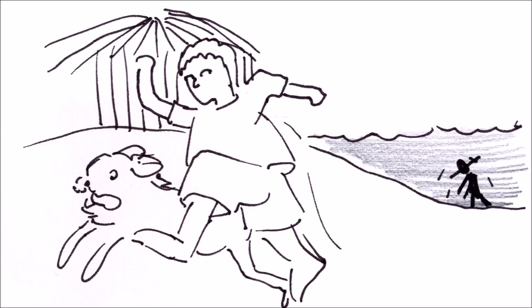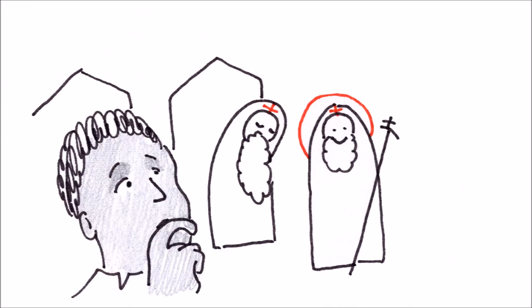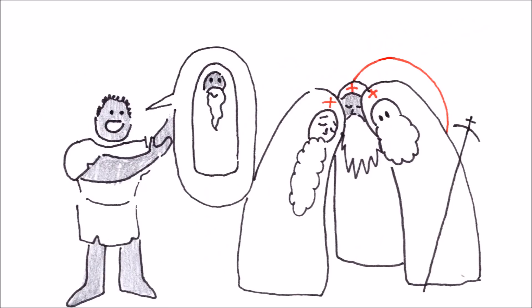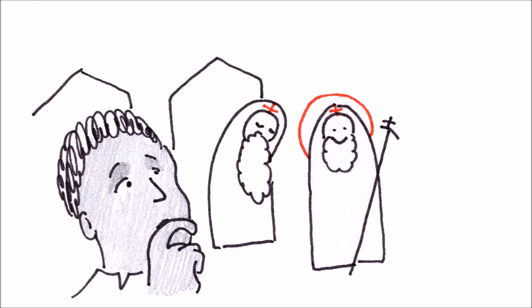As providence would have it, St. Moses once hid in a monastery of Scythes, close to Alexandria. There he witnessed the monastic life and he heard the call of repentance. He wanted to become a monk, but the monks were all like, yeah, you're a known criminal, you just want the authorities off your back.